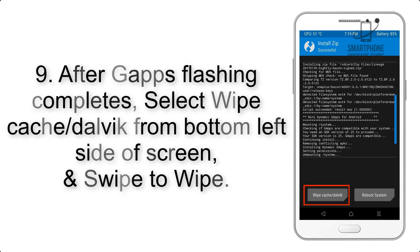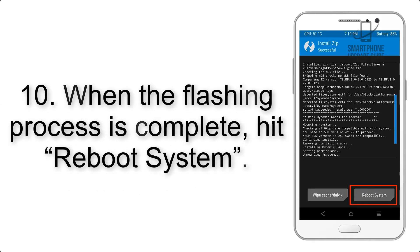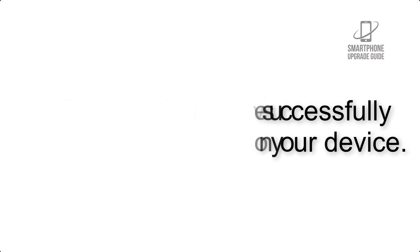Step 9: after Gapps flashing completes, select Wipe Cache and Dalvik from the bottom left side of the screen and swipe to wipe. Step 10: when the flashing process is complete, hit Reboot System. That's it — you have successfully installed the ROM on your device.